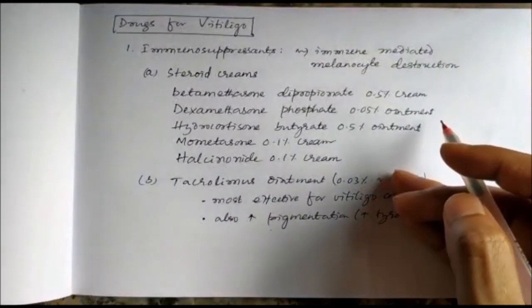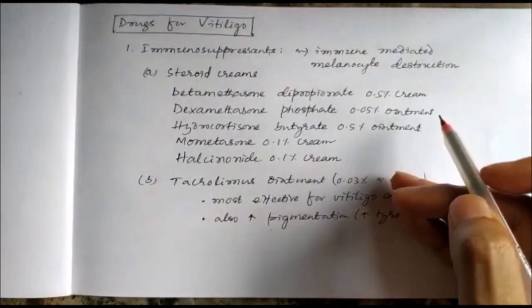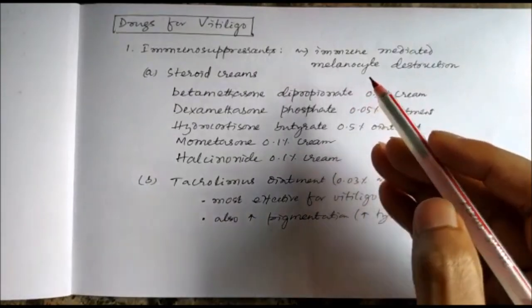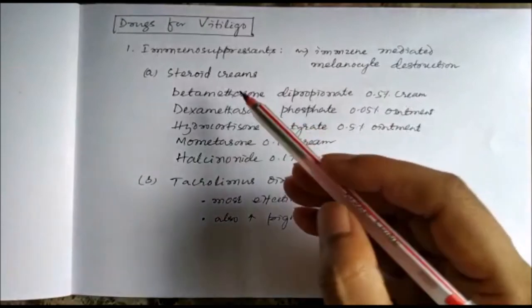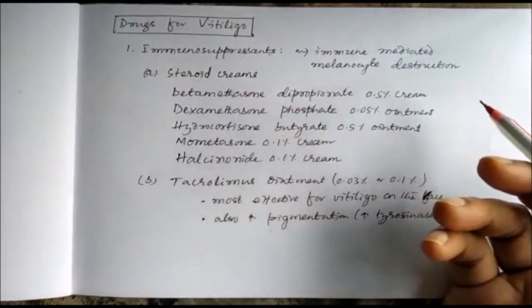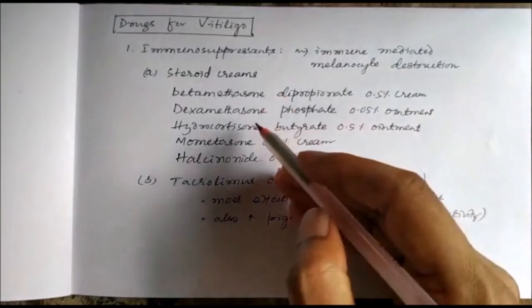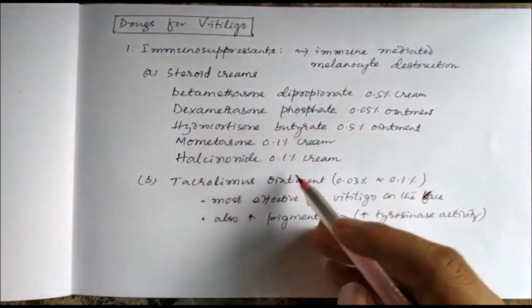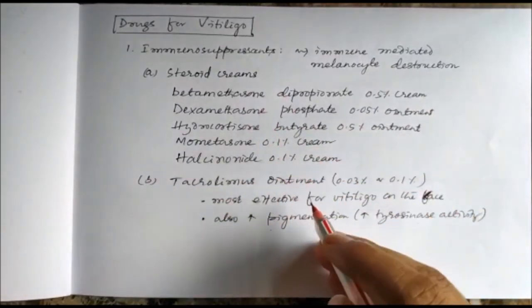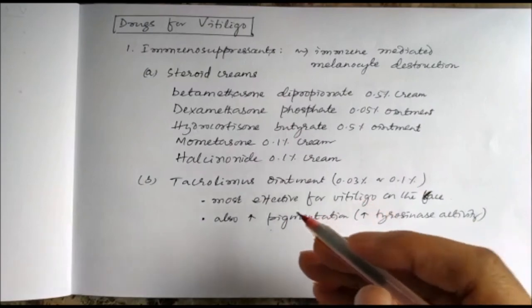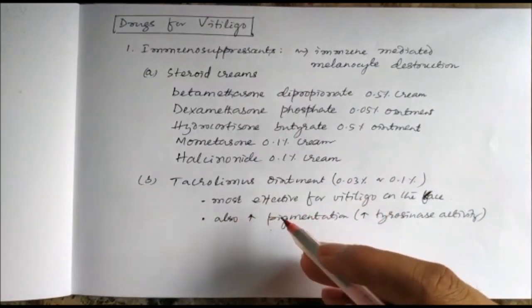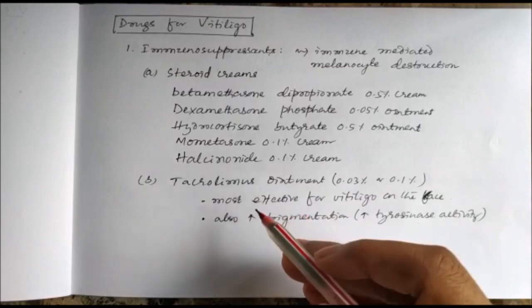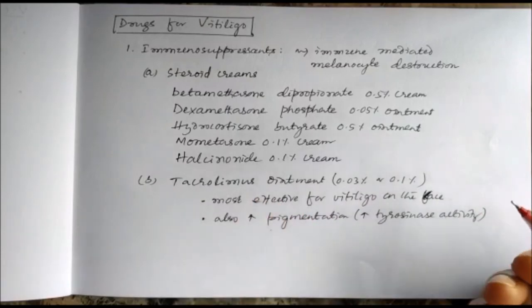For vitiligo, we can use immunosuppressants which will inhibit the immune-mediated melanocyte destruction. This includes steroids in the form of creams and ointments like betamethasone, dexamethasone, hydrocortisone, mometasone, halcinonide. Then the immunosuppressant which inhibits the production and action of interleukin-2—that is tacrolimus ointment.